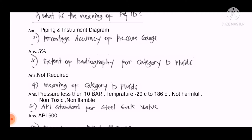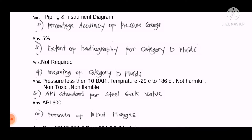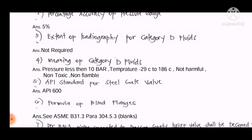Question number four: What is the meaning of category D fluids? The answer is: pressure is less than 10 bar, temperature range is minus 29 degrees centigrade to 186 degrees centigrade, and the fluid is not harmful, non-toxic, and non-flammable. This is how we explain the meaning of category D fluids to the interviewer.